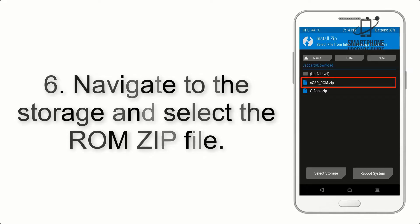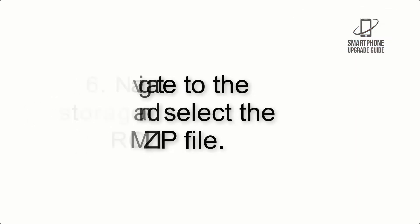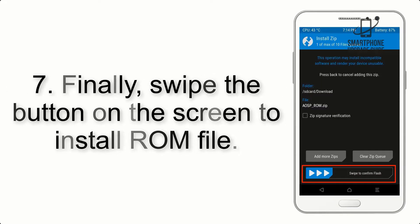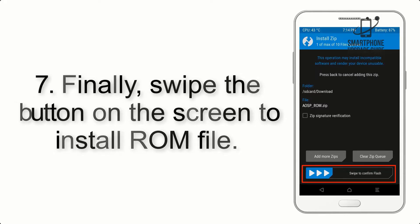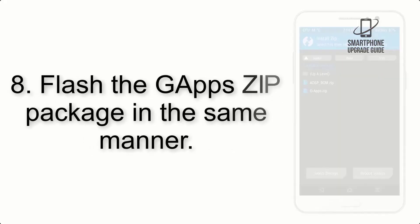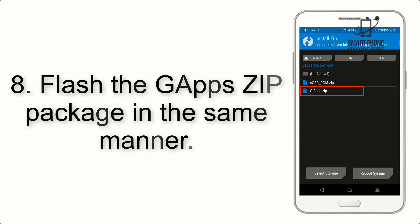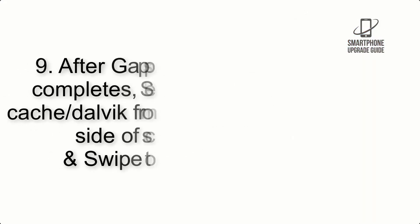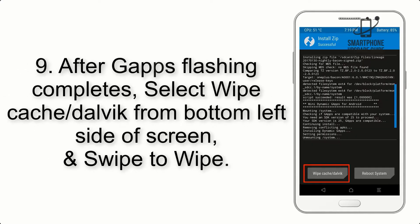Step 5: Go back to the recovery main screen and tap on the Install button. Step 6: Navigate to the storage and select the ROM zip file. Step 7: Finally, swipe the button on the screen to install the ROM file. Step 8: Flash the GApps zip package in the same manner.